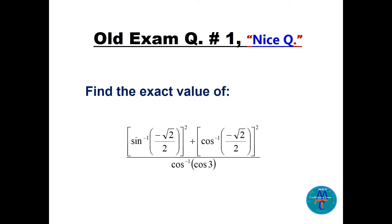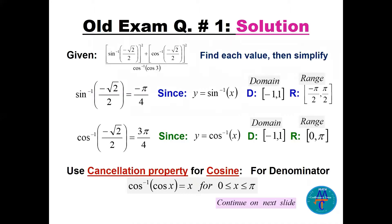Question number one: find the exact value of sine inverse of negative square root of 2 over 2, all squared, plus cosine inverse of negative square root of 2 over 2, all squared, divided by cosine inverse of cosine 3.